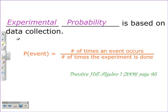Experimental Probability is based on data collection. The whole mindset compared to theoretical probability — what is supposed to happen — versus experimental probability — what actually is happening in real life. Experimental Probability is really useful in the manufacturing of products. We have the probability of the event, which is going to be the percent of what happens, and the number of times the event occurs, thinking about manufacturing — how many items are good or bad in a particular experiment or event. The number of times the experiment is done is how many samples they have, how many pieces they actually test. We're going to see how that works out in the coming examples.